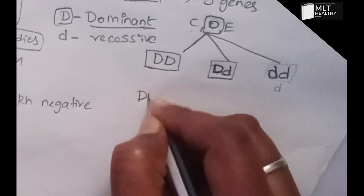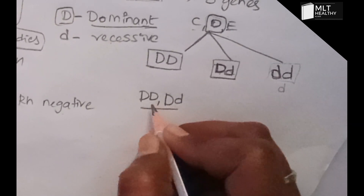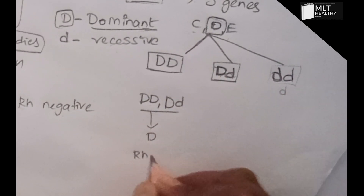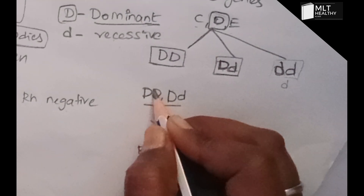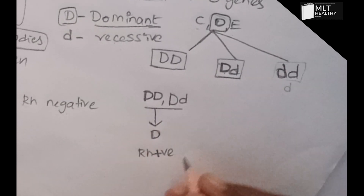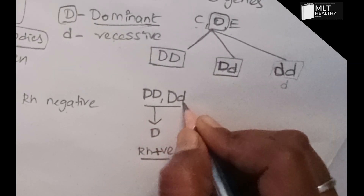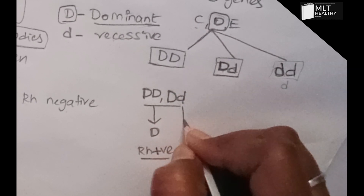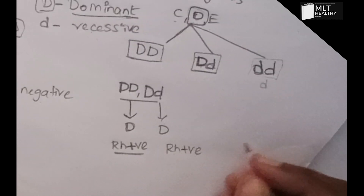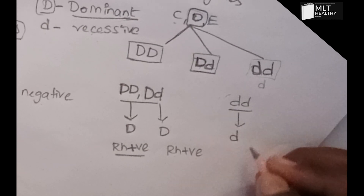So to summarize: if the dominant D allele is present — whether DD or Dd — the person is Rh positive, because D antigen is produced. If both alleles are recessive small d (dd), then D antigen is not produced, and the person is Rh negative.